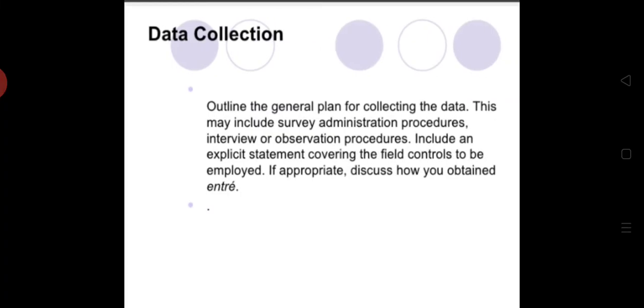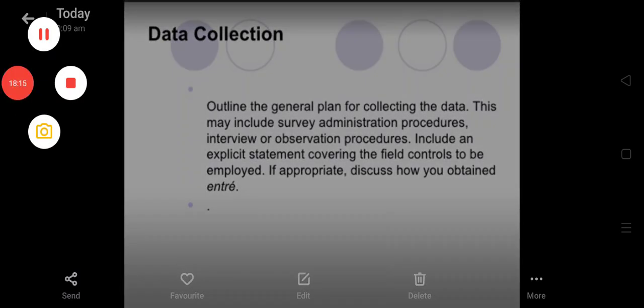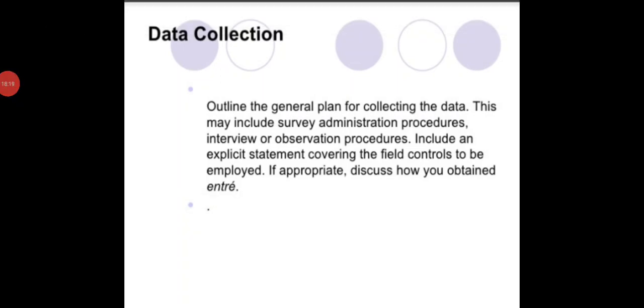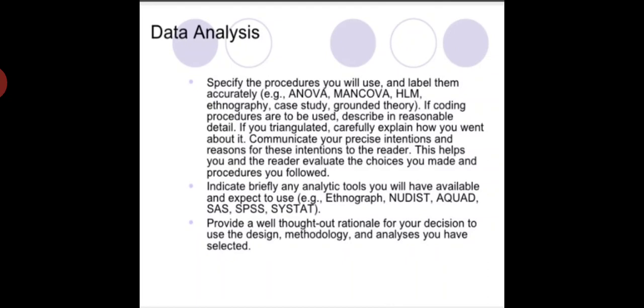For data collection, outline the general plan for collecting the data. This may include survey administration procedures and interviewer observation procedures, and should include explicit statements covering the field controls to be employed. Explain how you will obtain entries, whether you will get help from others or collect the data yourself, and what procedures you will follow in collecting the data.